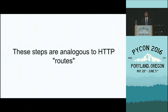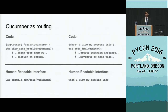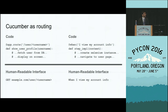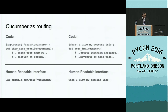The analogy I want to draw here is to routing in HTTP. If I had a route which displayed information about my user profile, I would define my route and associate that route with a method responsible for actually showing my user information. The cool thing about this is I get a clean human-readable RESTful route. And by analogy, I have my human-readable requirement 'when I view my account information,' and I am easily able to associate that with a piece of code which actually does the test.